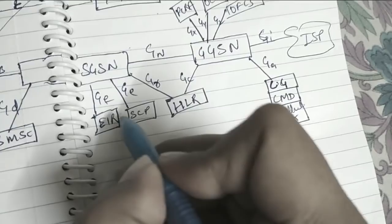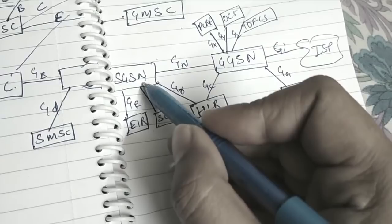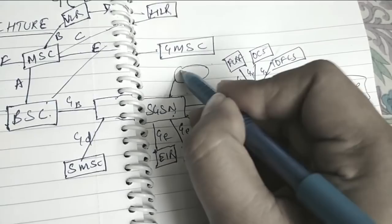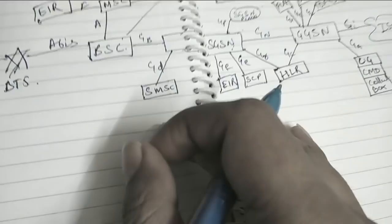Now let's say if this SGSN wants to connect with a different SGSN of different PLMN. So this SGSN will connect to different SGSN by GP Interface. GP Interface for different PLMN, Public Land Mobile Network. This is our basic 2G architecture.